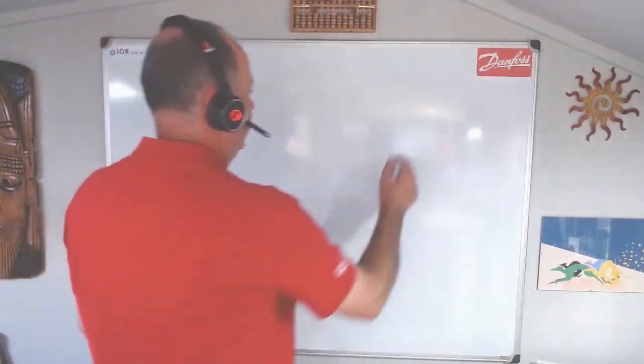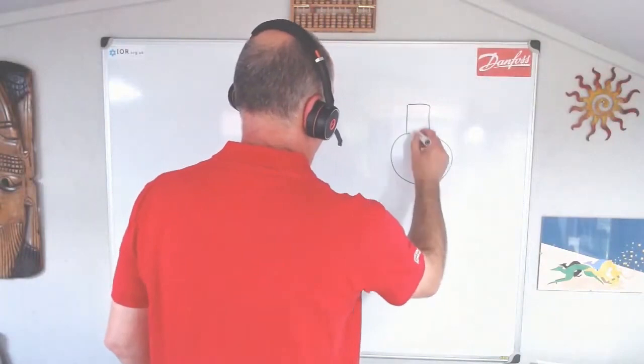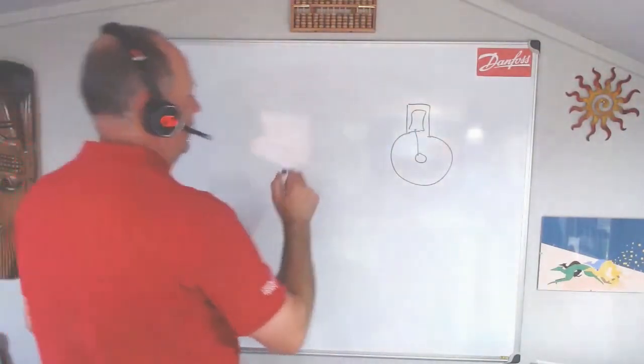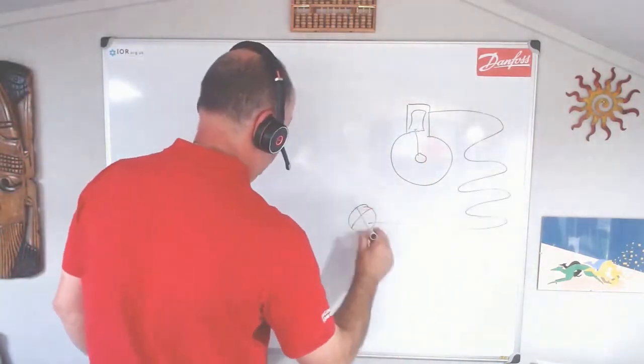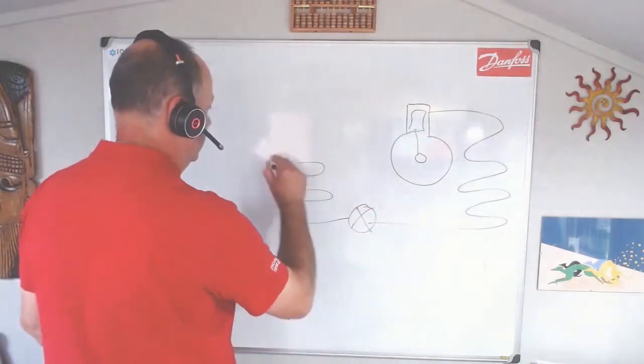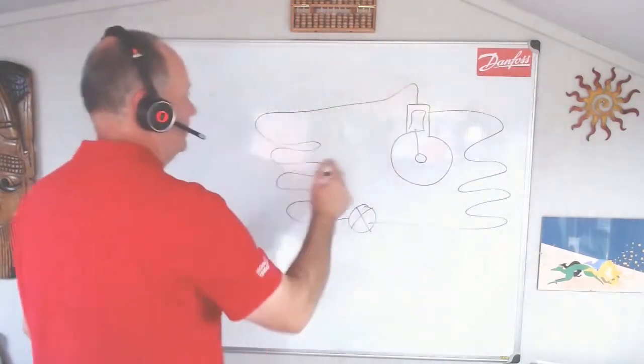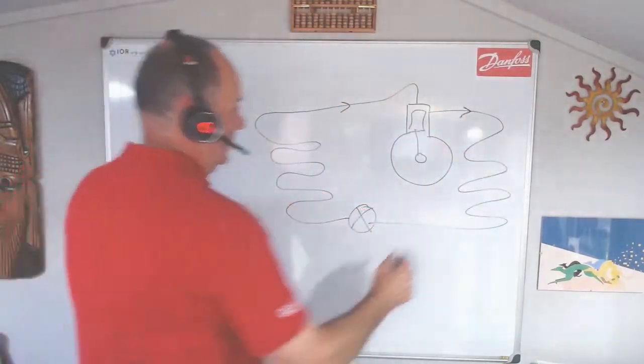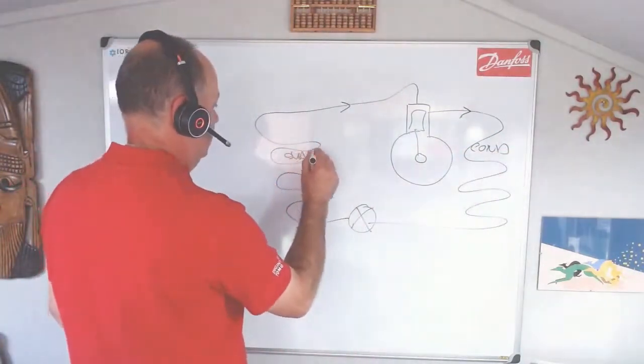So if we take it in simple terms, there's our compressor with its piston, and we've got our evaporator. We come out there, go through the condenser, through the expansion device, to our evaporator. Let's make it simple. That's suction, that's discharge—condenser and evap.